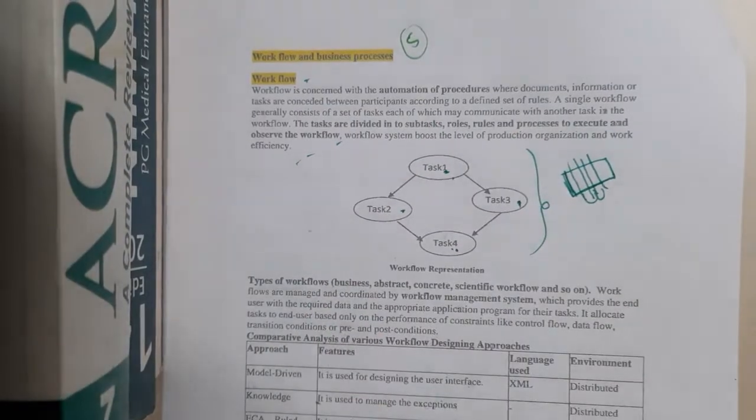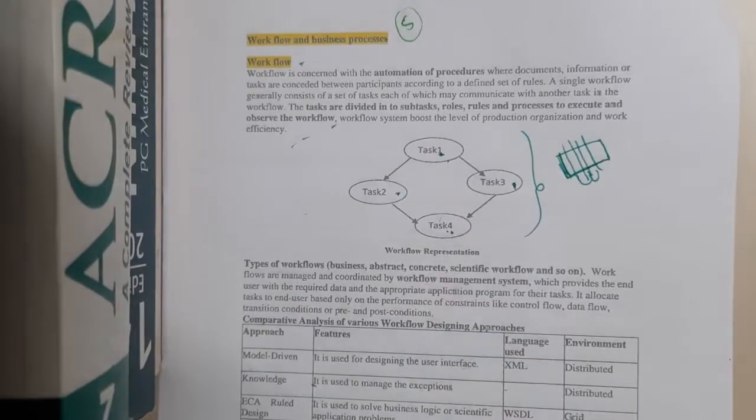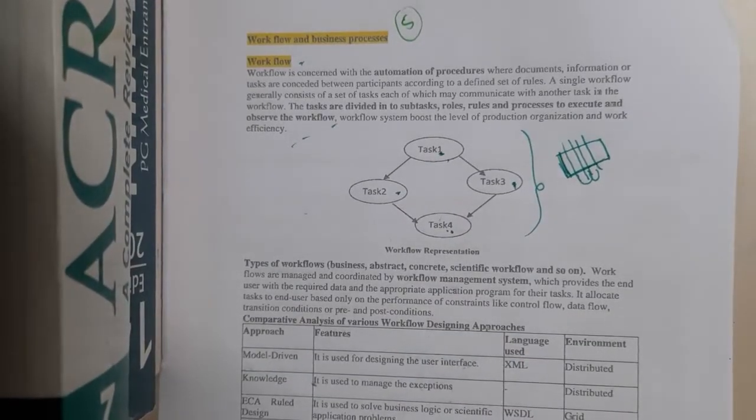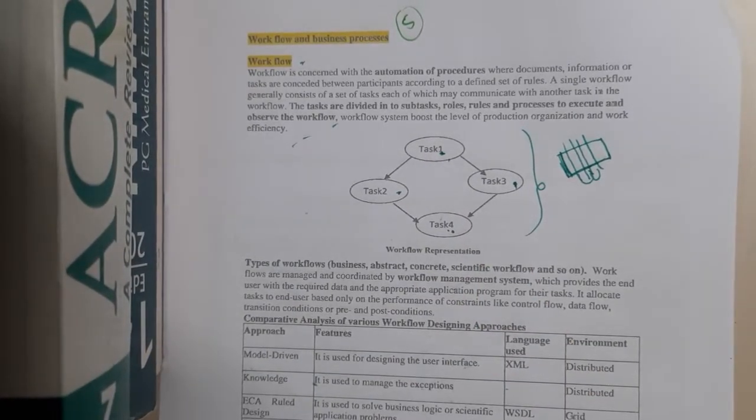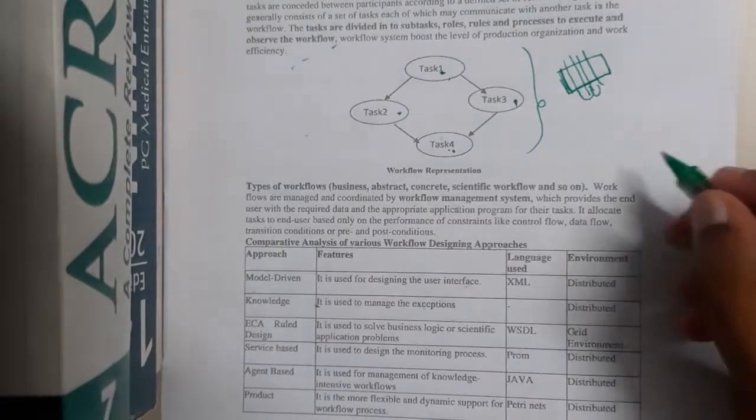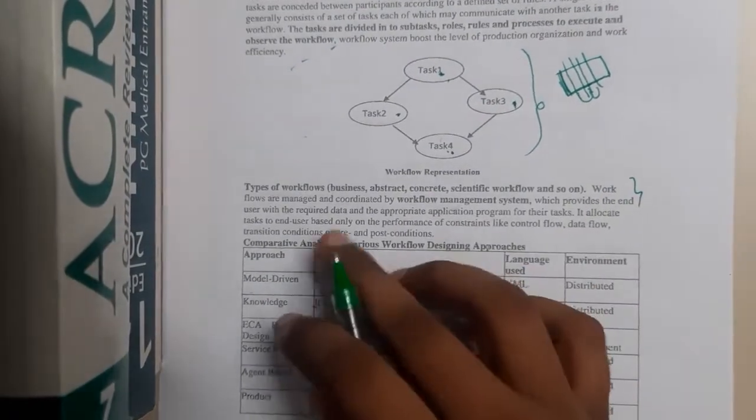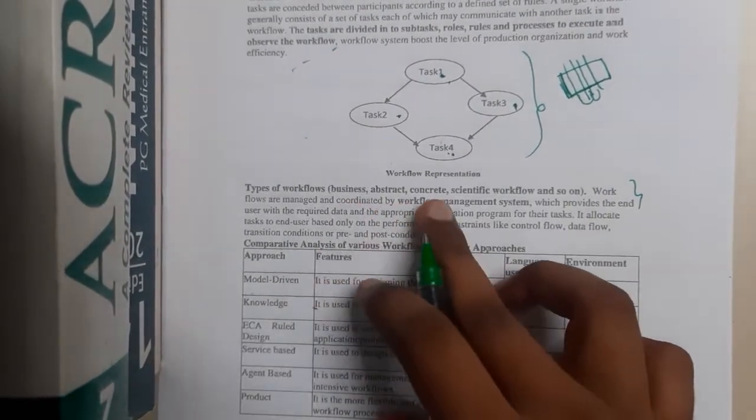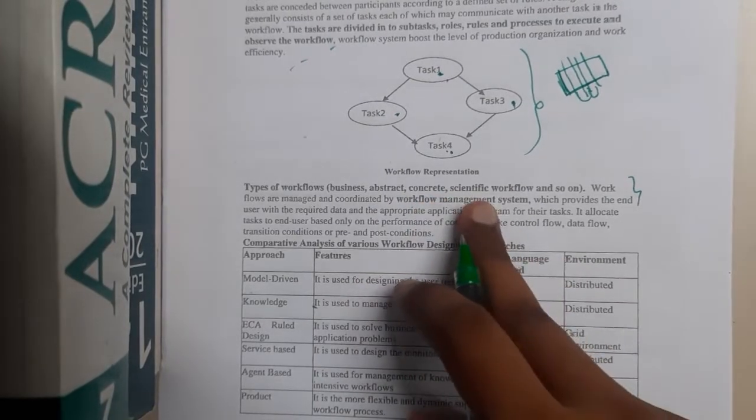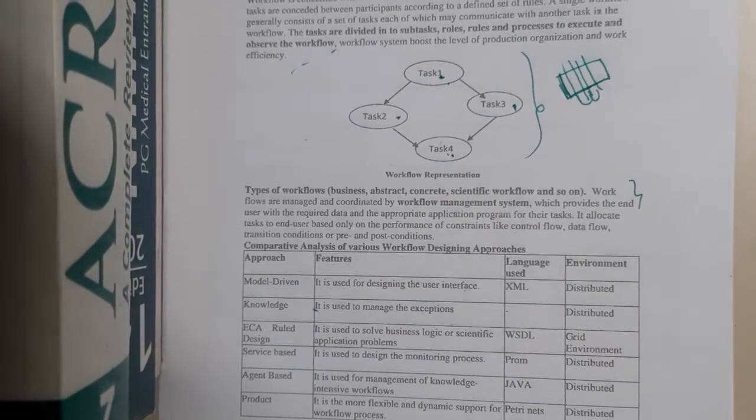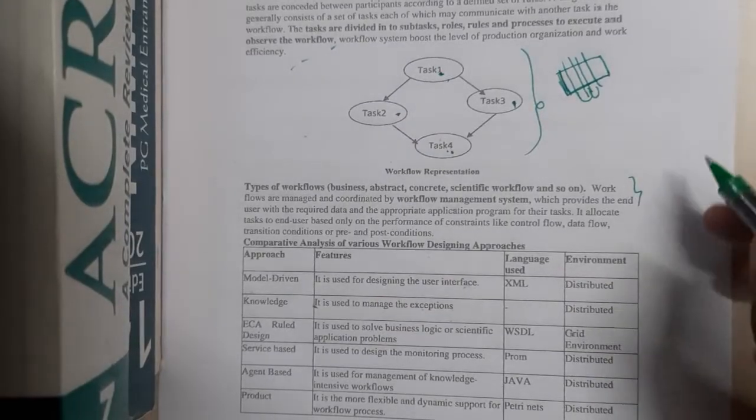You are having some rules and regulations, and you are following them in a proper way which gives a good sign about everything. We have multiple workflows: it might be with respect to your business, abstract, concern, concrete, scientific workflows, and so on. There are various workflows.